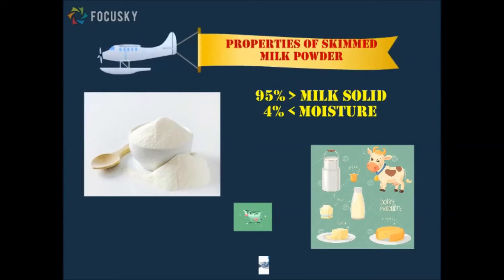Skimmed milk powder must contain no less than 95% milk solids and must not exceed 4% moisture or 1.5% of fat, unless otherwise indicated.